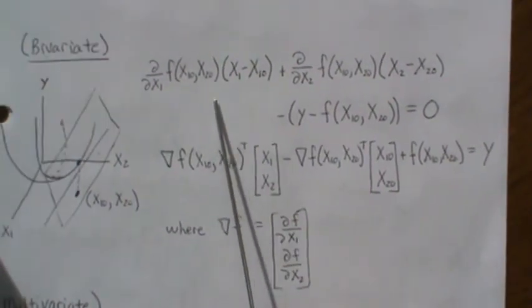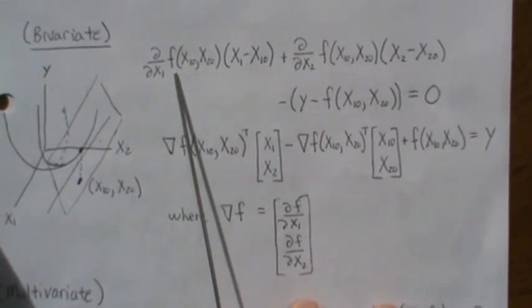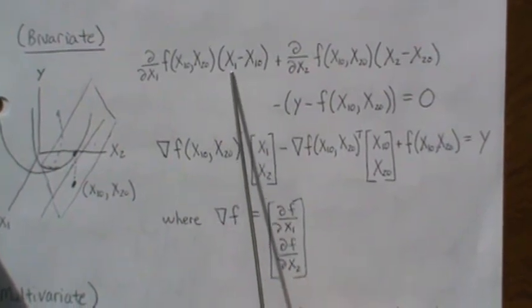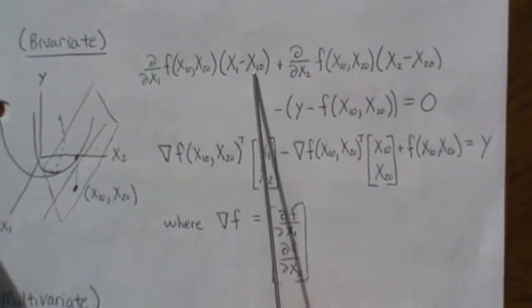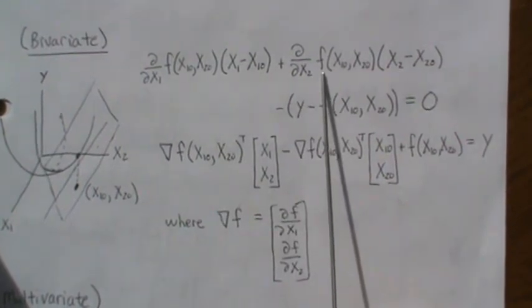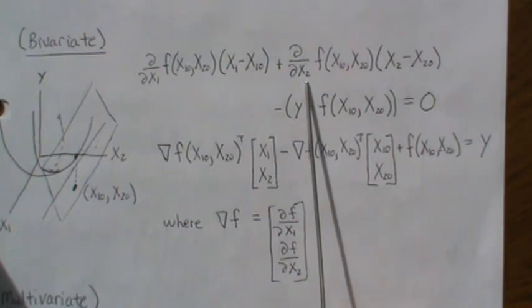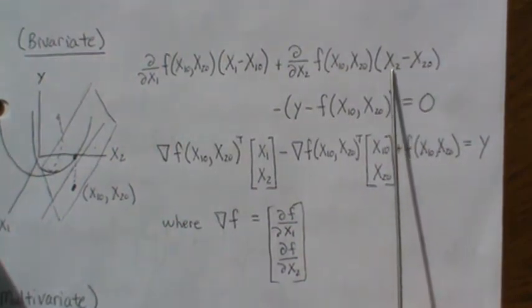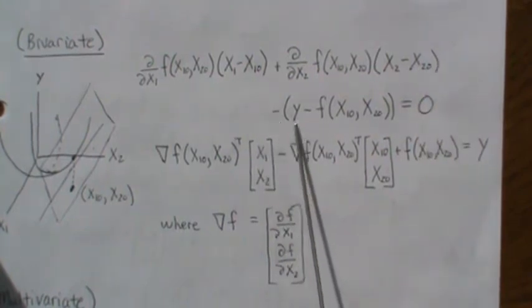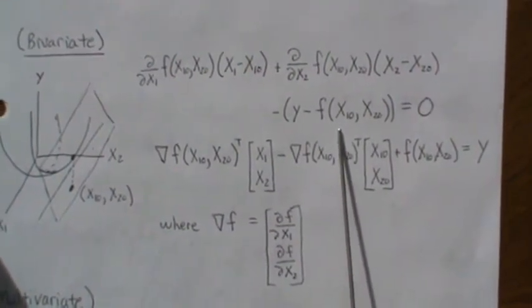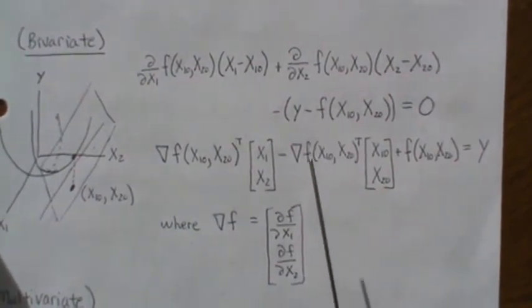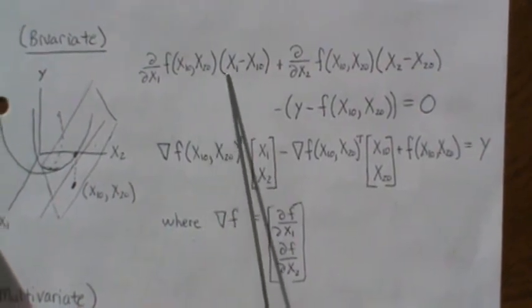Well, to find this plane, you do this: it's the partial of f with respect to x1 times this. So this is the coordinate x1, and this is the known point, the known x1 value. Then it's plus the partial of f evaluated at a point with respect to x2, and then times this. So the variable minus the known point value, then we subtract y, and this is the function evaluated at that point.